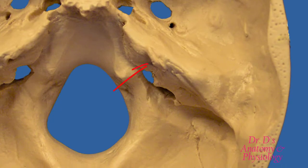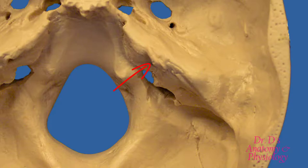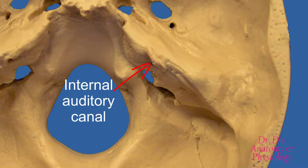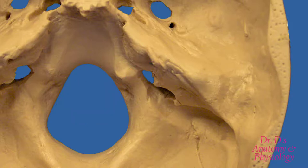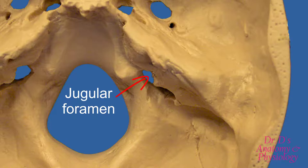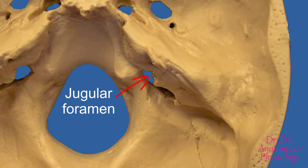On the posterior surface we find an opening that permits two cranial nerves to enter the bone: the facial nerve and the vestibulocochlear nerve. This opening is referred to as the internal acoustic meatus, or internal auditory canal. Right over here is the jugular foramen, where the internal jugular vein originates. This opening also allows passage of three important cranial nerves — the ninth, tenth, and eleventh. The temporal bone doesn't completely form this foramen but contributes via the jugular fossa, which joins with the jugular notch of the occipital bone.